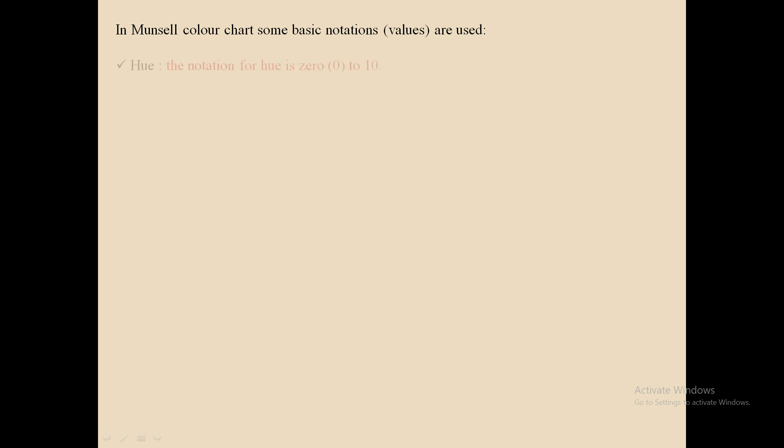In the Munsell color chart, some basic notation values are used. For hue, the notation value ranges from 0 to 10.